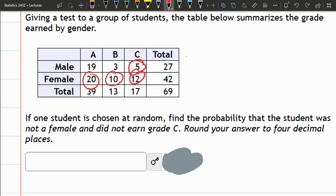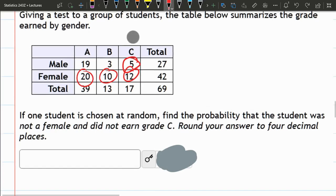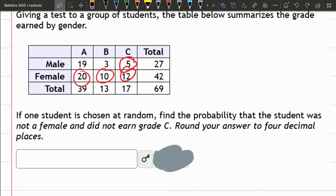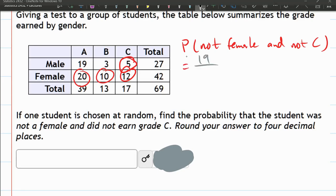Not female and did not earn a C, which means they're male, and either A or a B. We can compute this directly. 19 over 69 plus 3 over 69. You can also add those together, 22 over 69.